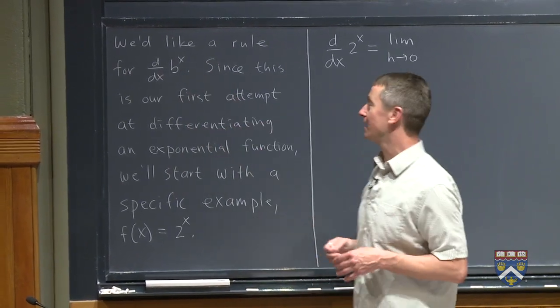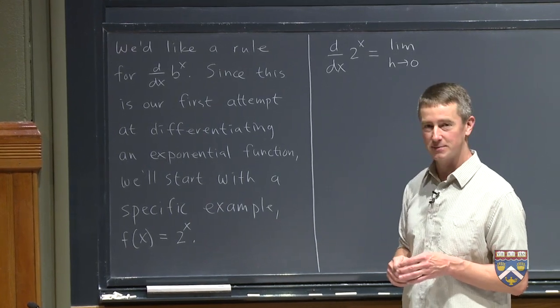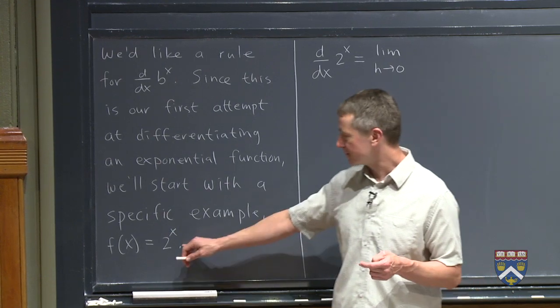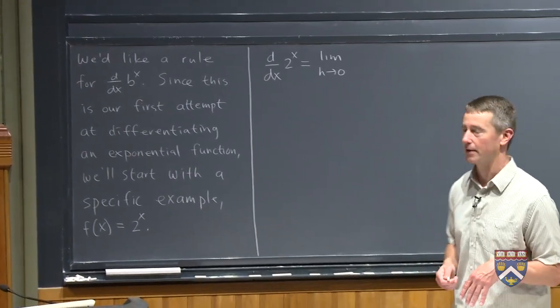So we'd like a rule for the derivative of b to the x, but this is our first try at differentiating an exponential function. So instead of jumping into the general case, we'll start with a specific example of just f of x equals 2 to the x, and see how that goes.